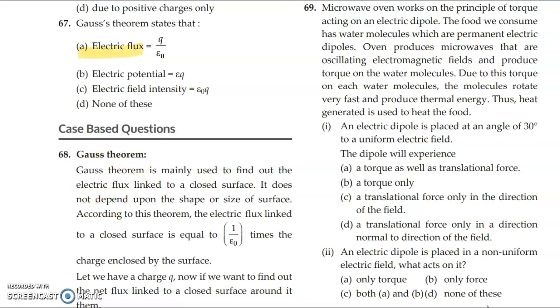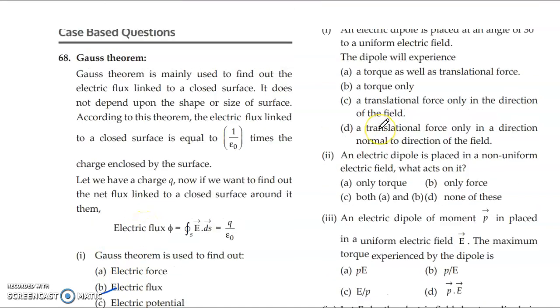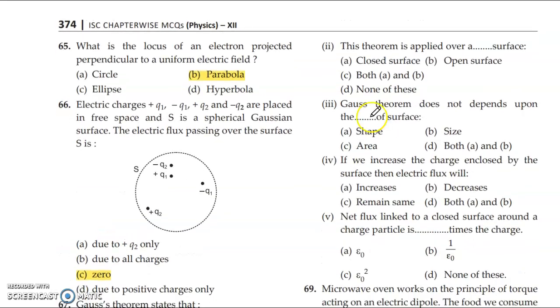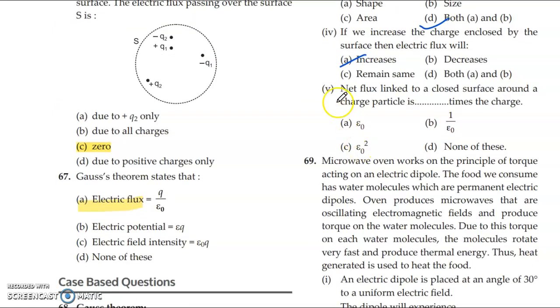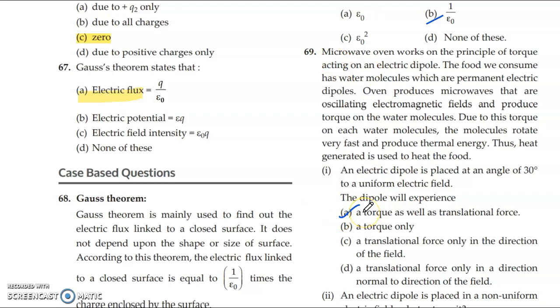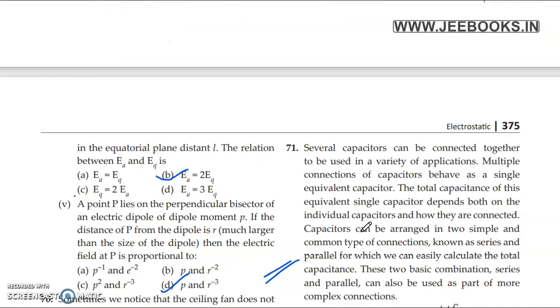Case based questions. They have given the formula of electric flux and explained Gauss theorem. Gauss theorem is used to find out electric flux. Part 2 answer is closed surface. Part 3 answer is D. Part 4 answer is option A, increases. Part 5 answer is option B. Now you can try this question. I have marked the answer. You can see. It has 5 parts.